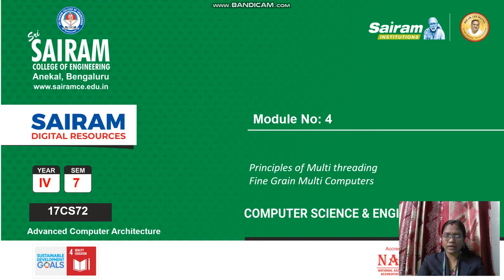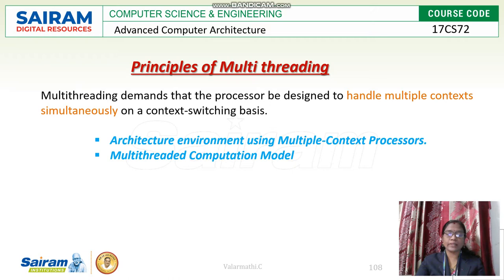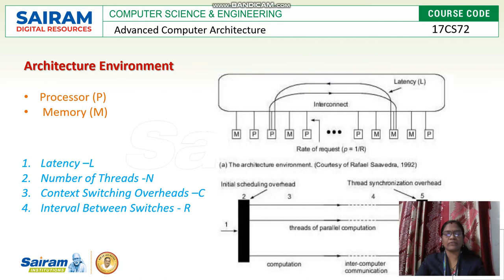In this video we are going to see about multi-threading and fine-grained multi-computers concepts in module 4. The principles of multi-threading demand that the processor should be designed in a multiple context manner to handle all processes simultaneously. There are two environments to follow in multi-threading: the architectural environment using multiple context processes, and the multi-threaded computation model.